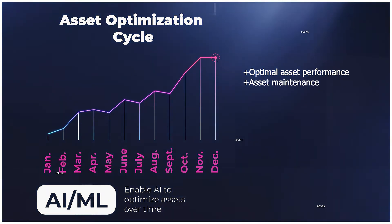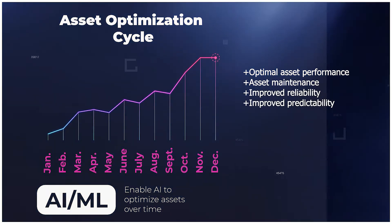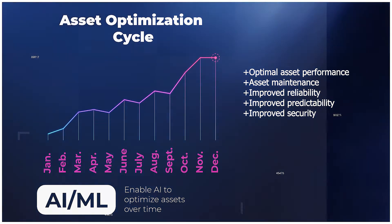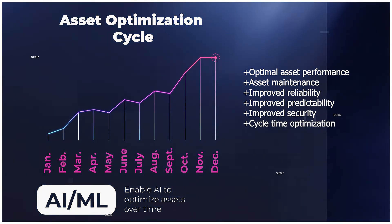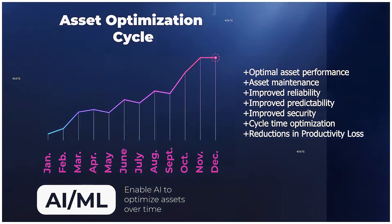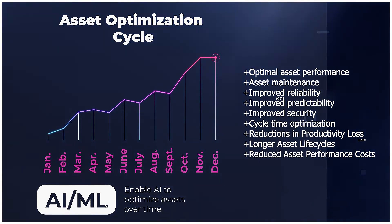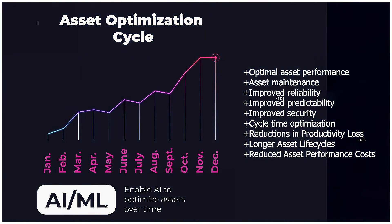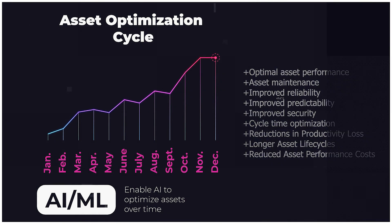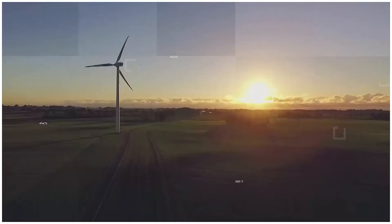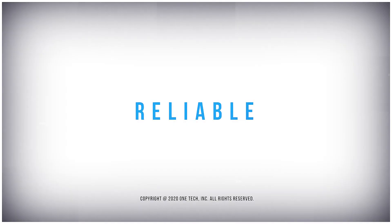Reductions in productivity loss, longer asset life cycles, reduced asset performance costs, and improved bottom lines. Micro AI Atom from One Tech — changing the face of asset performance management.